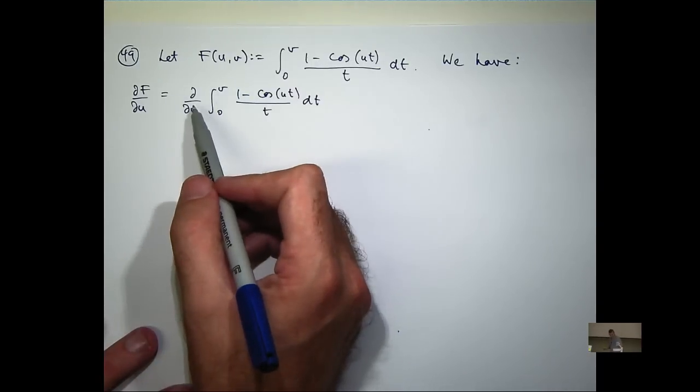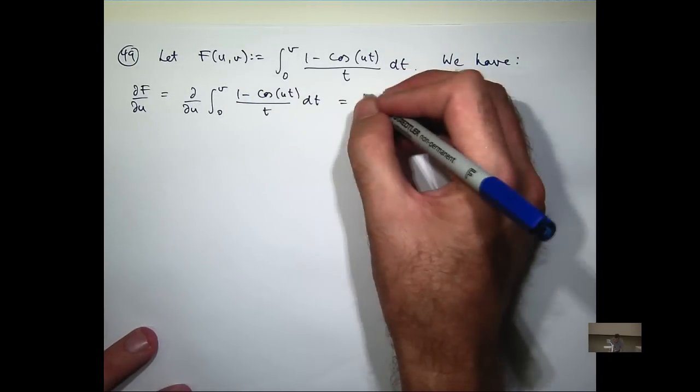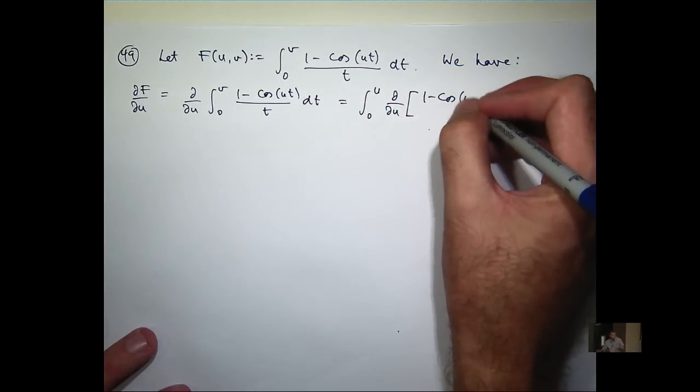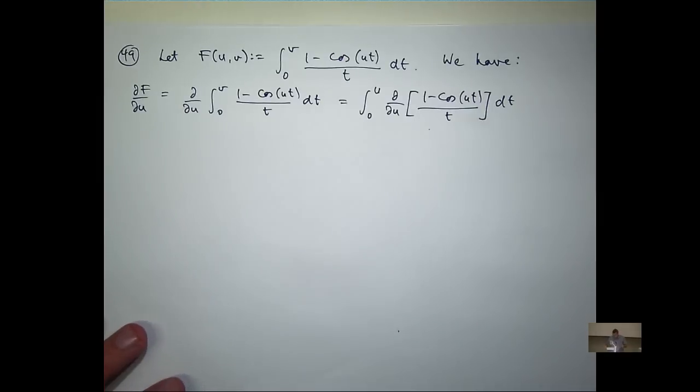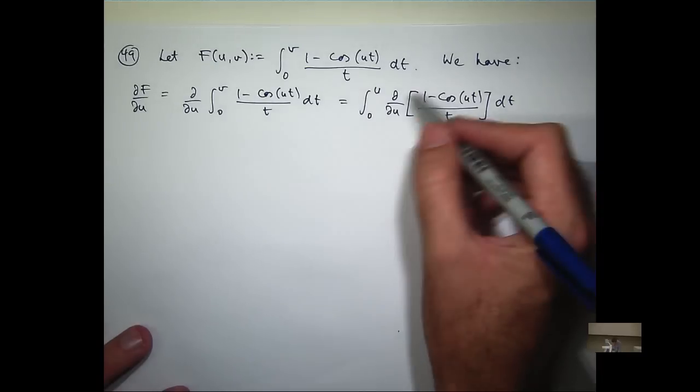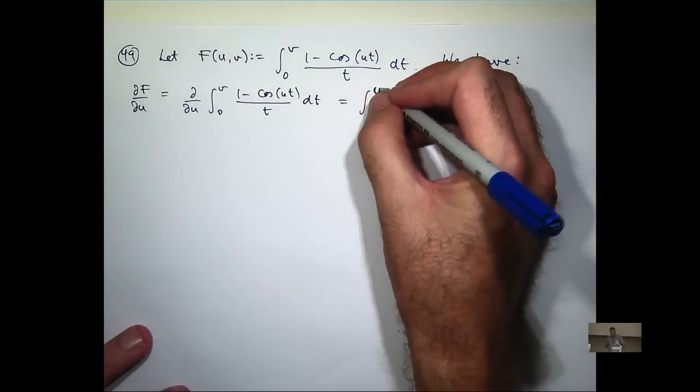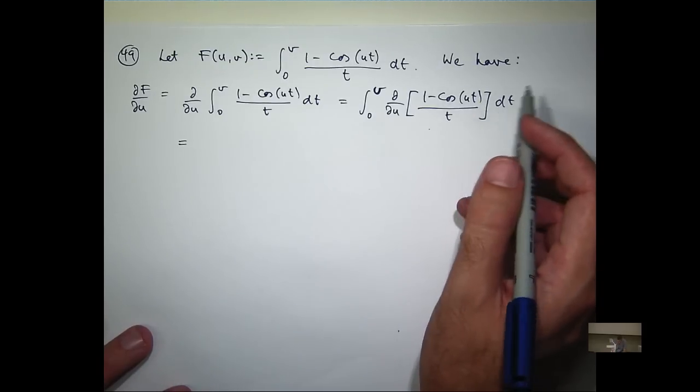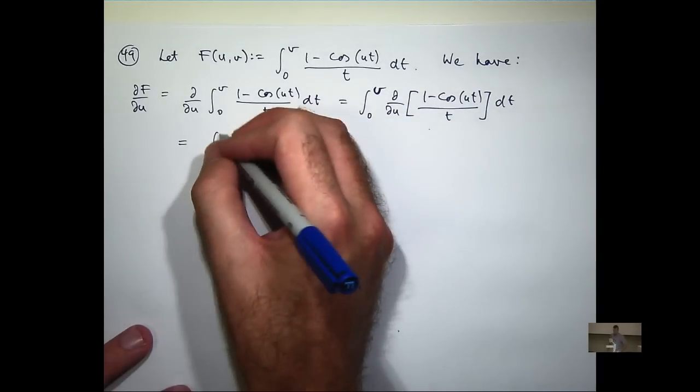Again, push the partial, or I guess the ∂/∂u inside the integral sign. So now I'm differentiating the integrand with respect to u. This is a V up here. And so the cosine is going to go to negative sine, and I'm going to bring a T to the front. And the one's going to go to zero.